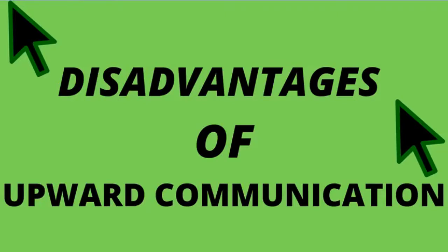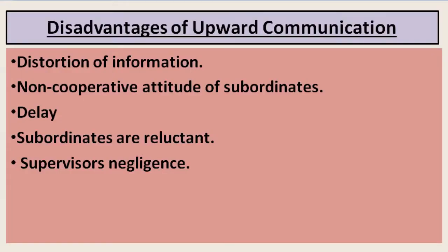As you know, we are doing our communication series. In continuation of that series, today we are going to learn about some disadvantages of upward communication. So here I begin — these are some disadvantages of upward communication as you can see on your screen, and the very first one is distortion of information.